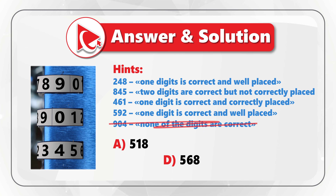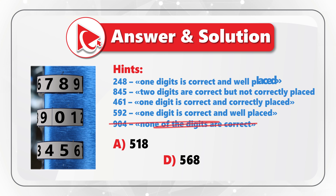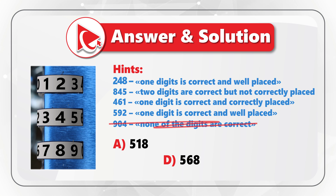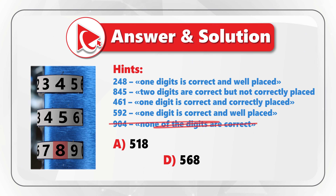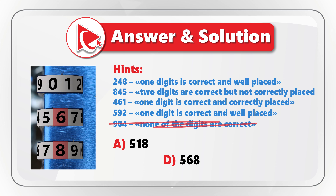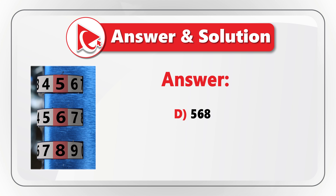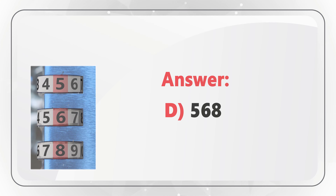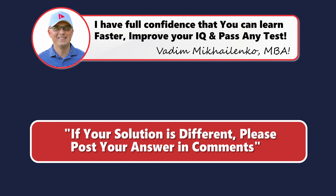Continuing elimination: in hint 1, where digits are 2, 4, 8, only one digit is correctly placed, which is digit 8. In hint 2, two digits are correct but not correctly placed, and they are digits 8 and 5. In hint 3, only digit 6 is correct and it is correctly placed. And in hint 4, digit 5 is correct and it is well placed. Based on this, the correct answer here is choice D: 5, 6, 8. Do you have any tips on how to best solve these types of challenges? If you do, please make sure to post them in comments.